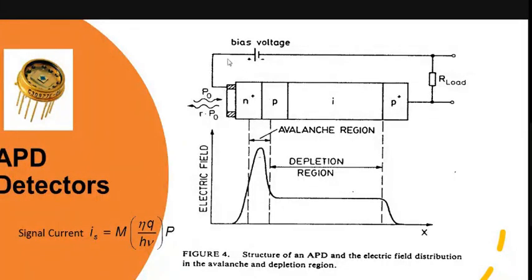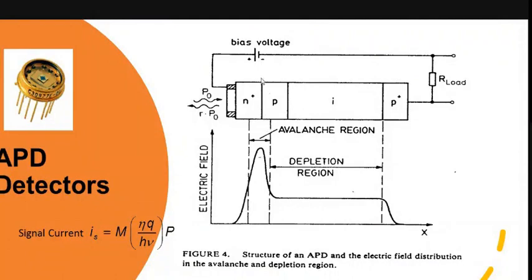The APD is reverse biased. A high field region exists at the n+p junction. The configuration can also be p+, n, intrinsic, n+. The aim is to achieve a high field region at the n+p point — this is the high field region where exactly the avalanche multiplication or impact ionization takes place. A peak field is shown at this region.